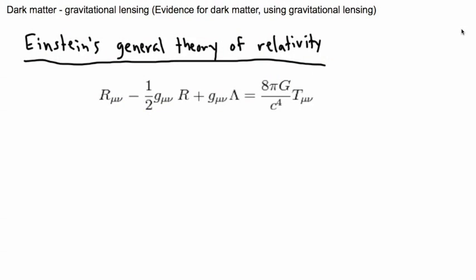Another strong piece of evidence for the existence of dark matter is something we call gravitational lensing. This has to do with Einstein's general theory of relativity, and this is an awesome theory.